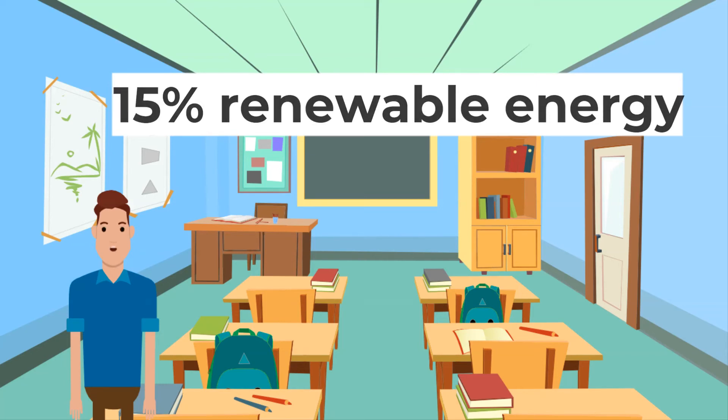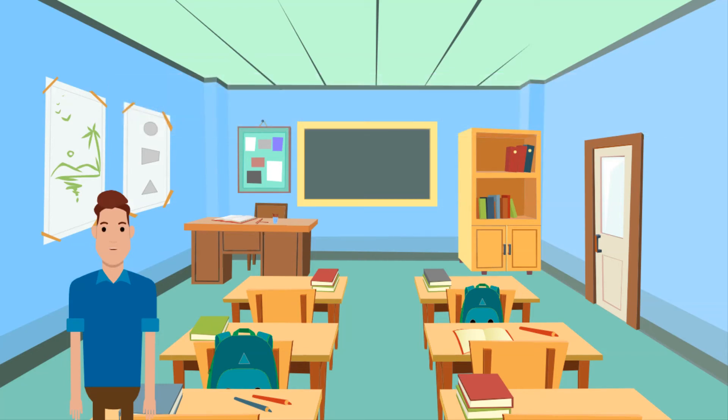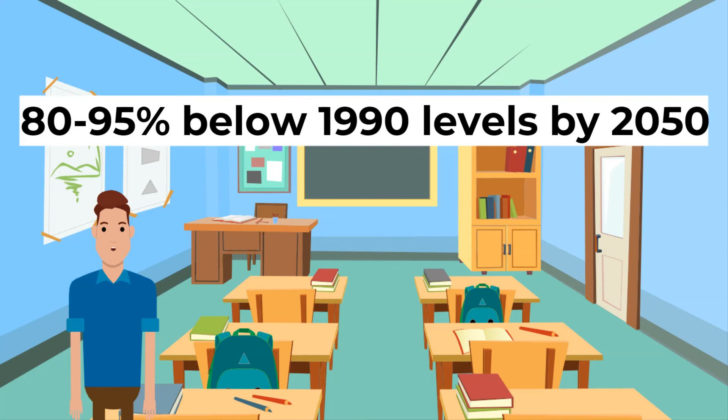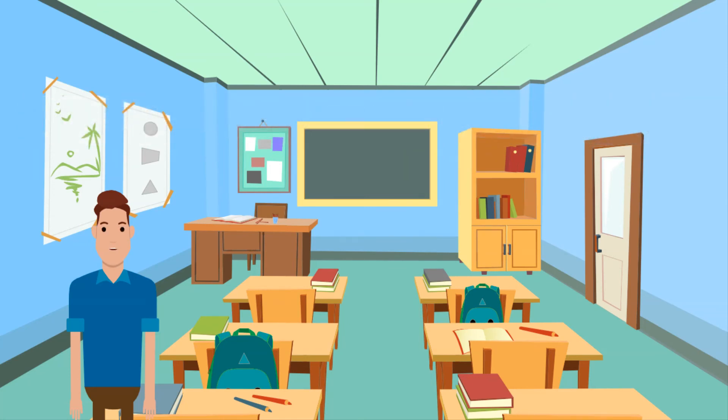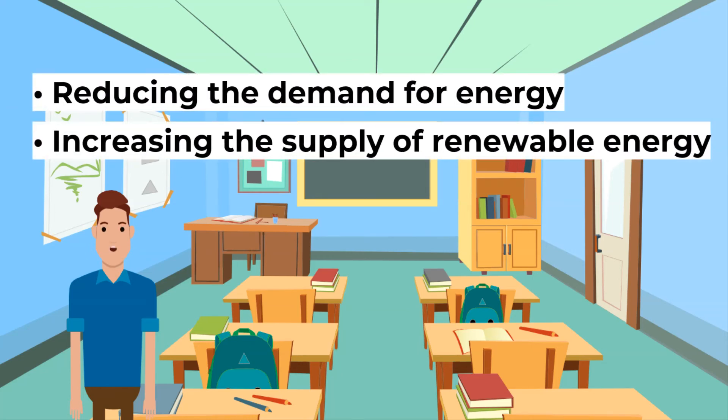Sweden has a target of nearly 50% whereas Malta has a target of 10%. The EU also aims to reduce greenhouse gas emissions by 80 to 95% below 1990 levels by 2050. There are two ways the energy use can change in the UK: reducing the demand for energy and increasing the supply of renewable energy.